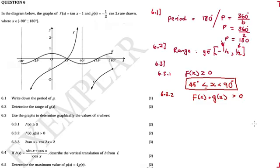So h of x is what we get when we take f of x and add 2. There has been a vertical translation of 2 units upward. The answer to 6.4 is: h is a vertical translation of f by 2 units up.